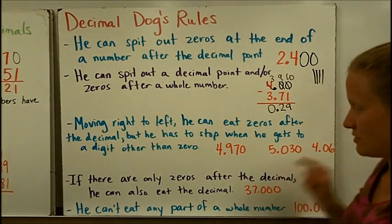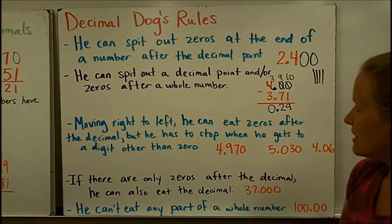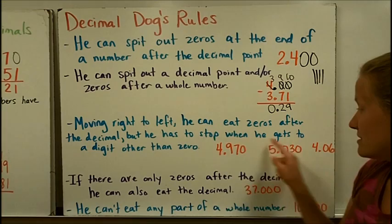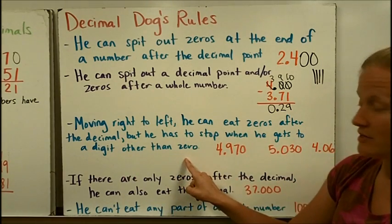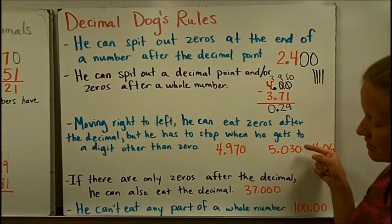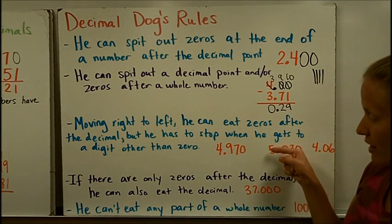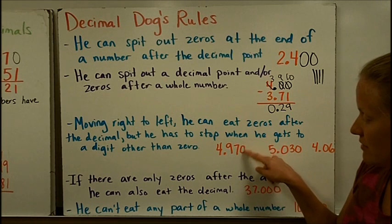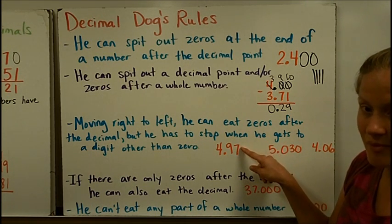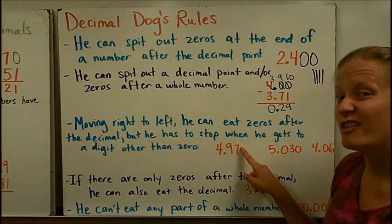Moving right to left, he can eat zeros after the decimal, but he has to stop when he gets to a digit other than zero. Looking at this number, 4.970, he's going to start eating those zeros right to left and he can eat this zero. But when he gets to this seven, he has to stop. He can't eat any digits other than zero.